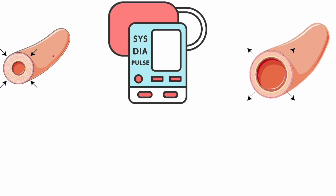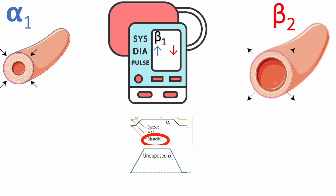Let's draw out what would come out on the blood pressure monitor. We already agreed that beta-1 receptors primarily affect systolic blood pressure, so elevation of heart rate or contractility will elevate systolic blood pressure. Now, alpha-1 receptors lead to vasoconstriction and increase total peripheral resistance, which will therefore increase diastolic blood pressure. On the other hand, beta-2 receptors cause vasodilation, decrease total peripheral resistance, and will therefore decrease diastolic blood pressure. So diastolic blood pressure and total peripheral resistance go hand-in-hand.